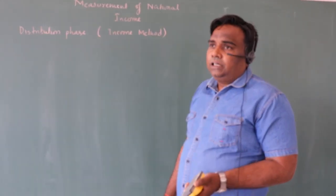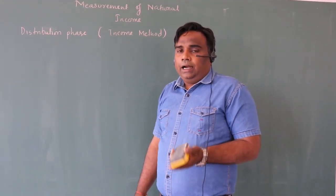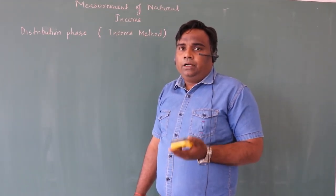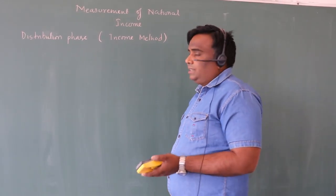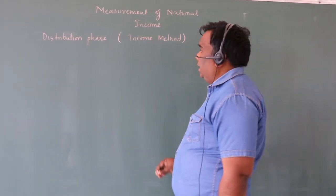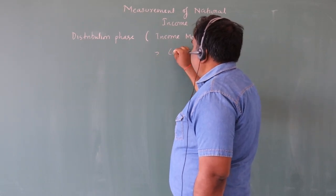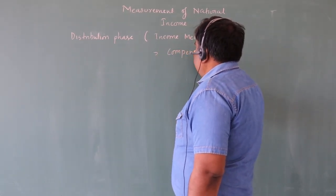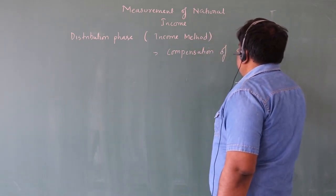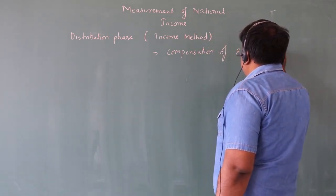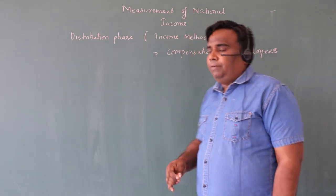The factor incomes are four: land, labor, capital, and entrepreneur. Labor earns wages — compensation of employees, also known as remuneration of employees. Compensation of employees is distributed in three parts.